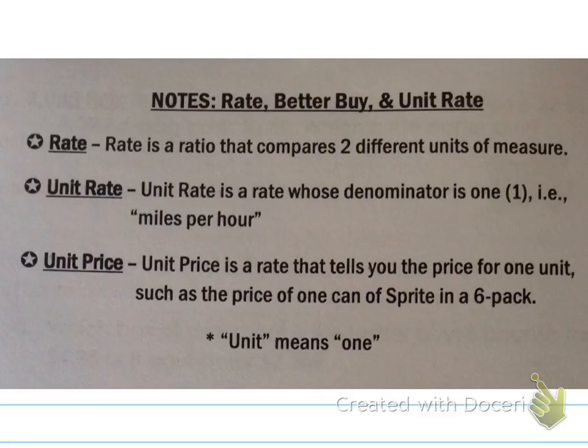First we need some vocab. So rate is a ratio that compares two different units of measure. A unit rate is a rate whose denominator is one, like miles per hour.